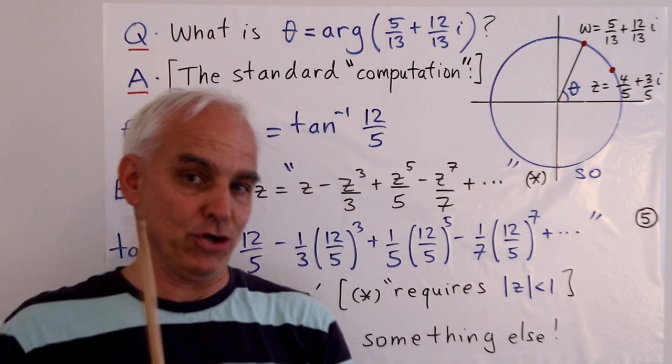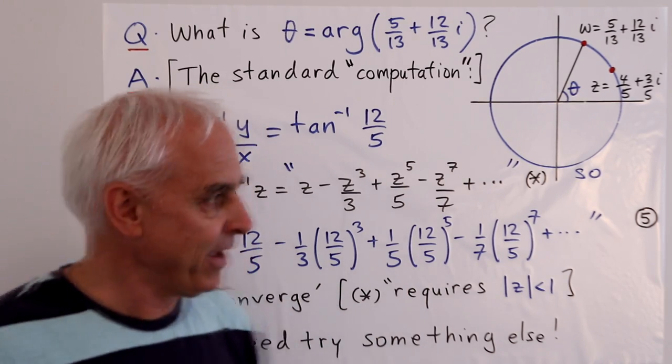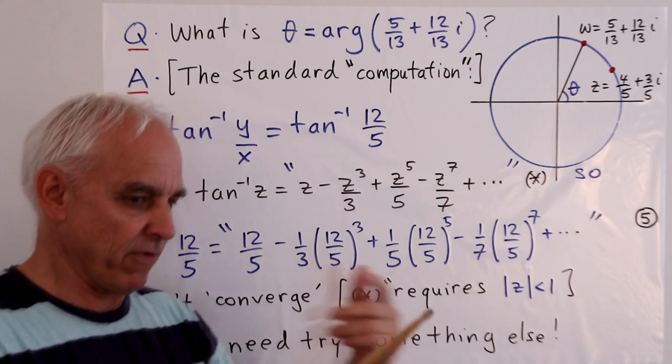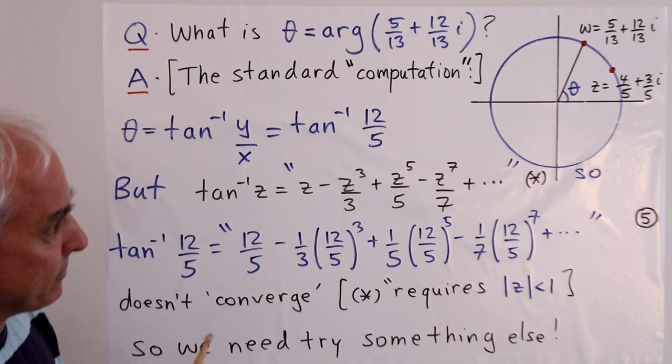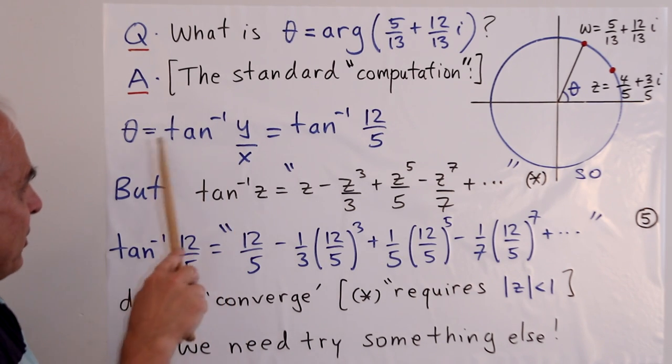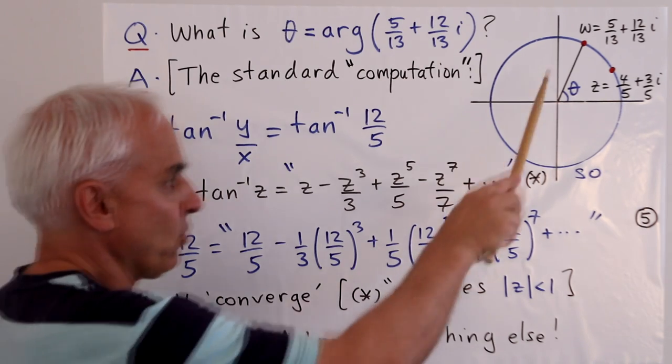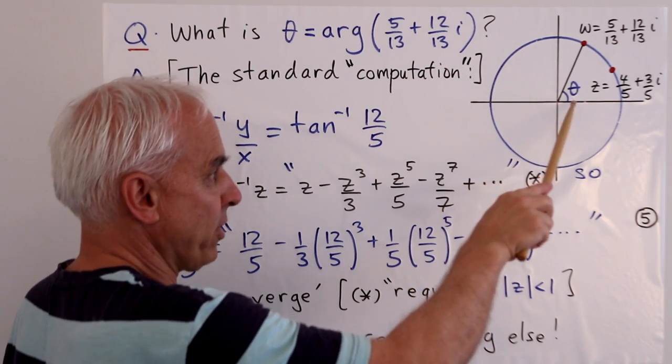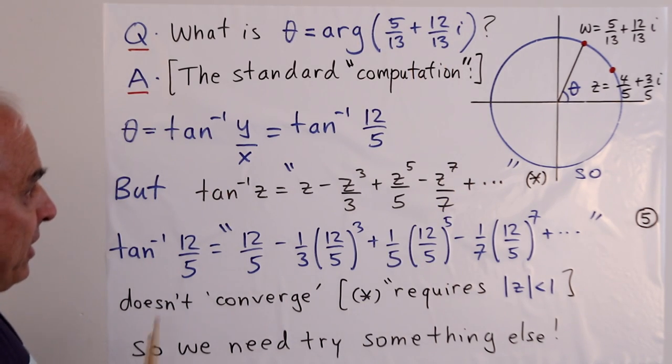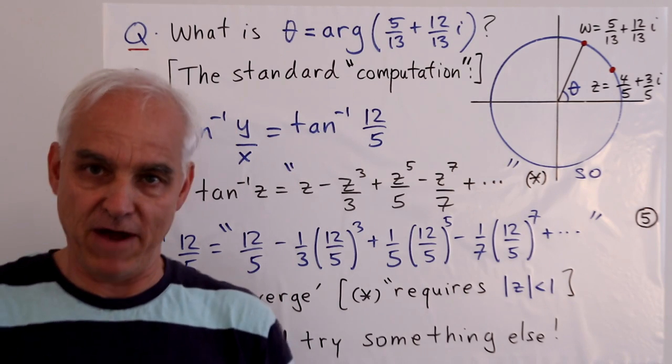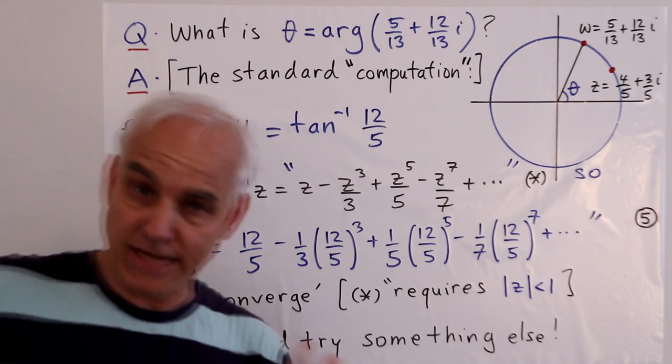Well, that's a standard computation that most undergraduates know how to do at some level. They know that you have to do a certain number of things. The first thing an undergraduate would think is that we need an arctan function here. Usually the formula is that θ equals tan⁻¹(y/x). So you take your y coordinate and x coordinate, which in this case are 12/13 and 5/13, and you take the ratio and you take tan⁻¹(12/5). What is tan inverse or arctan? Same thing.